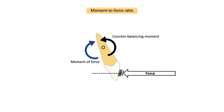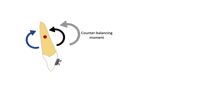As the counter-balancing moment increases, the center of rotation moves apically. For example, in translation: when a force to move a tooth is applied at the bracket — approximately 10 millimeters from the center of resistance — a tendency for the tooth to tip is created that is 10 times the magnitude of the force.